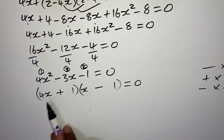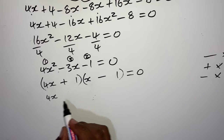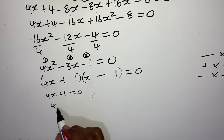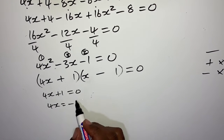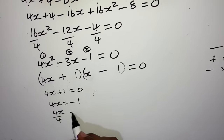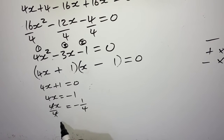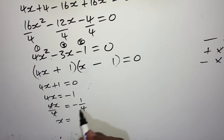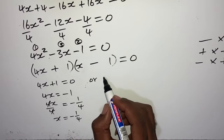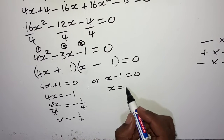I found my two x values. Since we are dealing with simultaneous equations, the instruction is to solve for x and y. We are done solving for the x values; we now need to find the y values. To find the y values, substitute the x values into equation 1. Draw a dividing line — the rule is to substitute the x values into equation 1, which is y = 2 minus 4x.